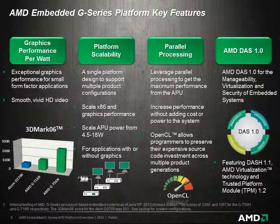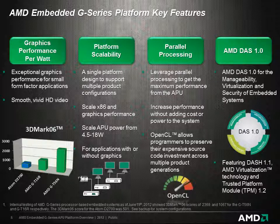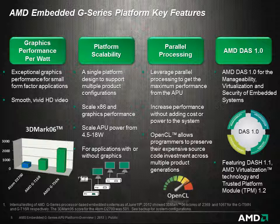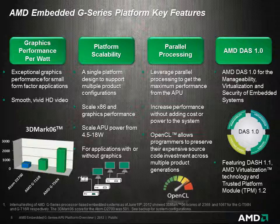Leveraging the GPU for a combination of graphics and parallel processing enables system designers to unlock additional performance from the APU without adding cost or higher power components to the system. And by leveraging tools such as OpenCL, which abstract the software from the hardware, the software can be easily migrated to next-generation platforms.